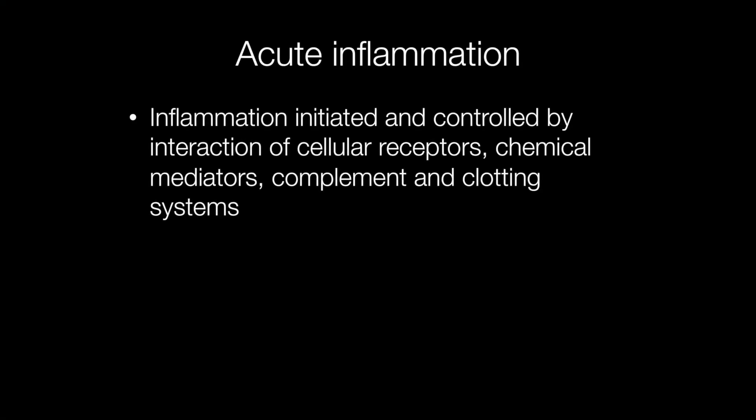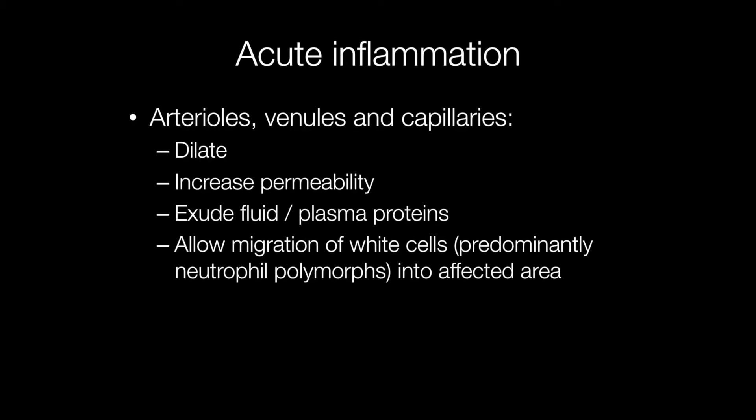I am giving a very simple overview of acute inflammation, but the process is actually quite complex, with inflammation being initiated and controlled by interaction of cellular receptors, chemical mediators, complement, and clotting systems. The changes that occur in the tissues include dilatation of arterioles, venules and capillaries, increased permeability, and fluid exuding with plasma proteins into the surrounding tissues. This allows migration of white cells, predominantly neutrophil polymorphs, into the affected area.